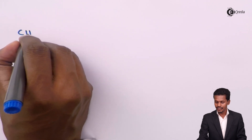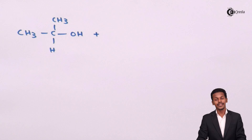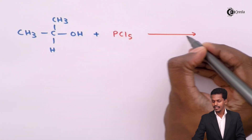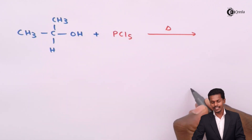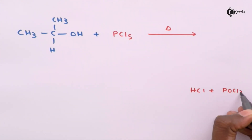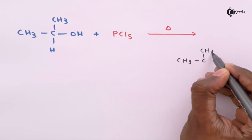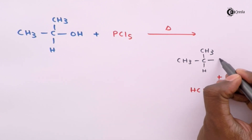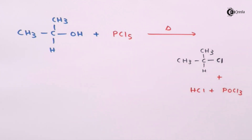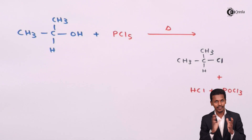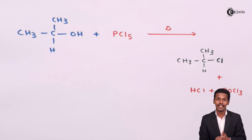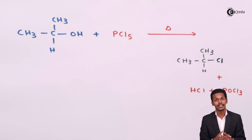For example, if we take a secondary alcohol like CH₃CH(OH)CH₃ and treat it with PCl₅ and heat it, the byproducts are HCl and POCl₃ (phosphorus oxychloride), and the main product obtained is 2-chloropropane.